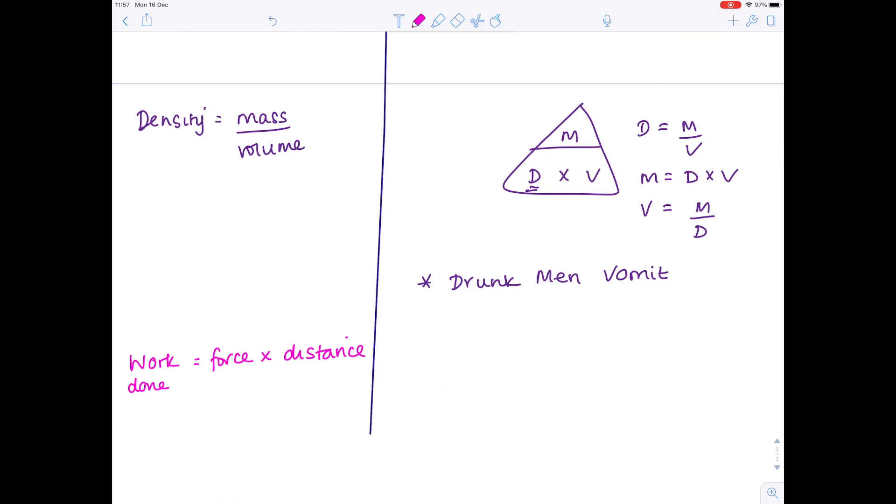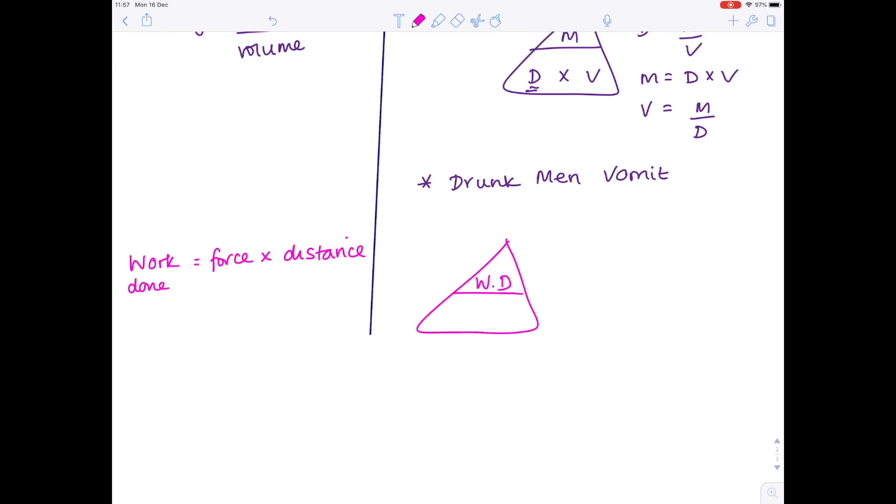So work done equals force times distance. This fits very nicely into a triangle. So work done equals force times distance. Force equals work done divided by distance. And distance equals work done divided by force.